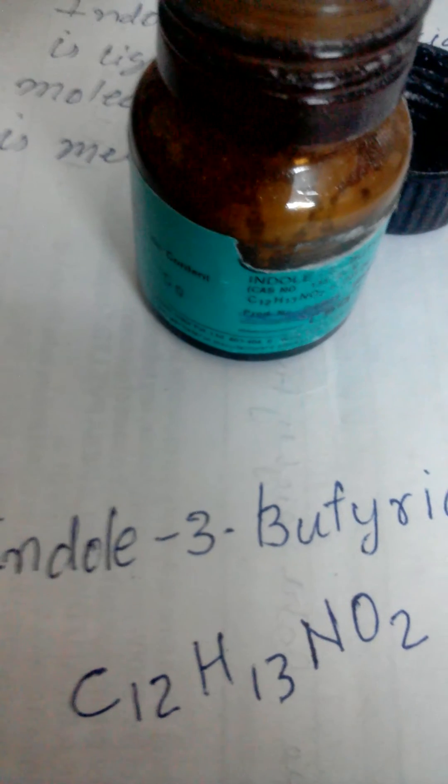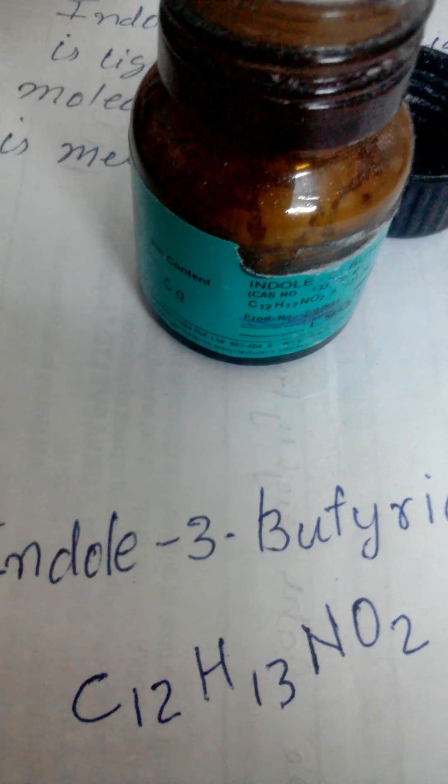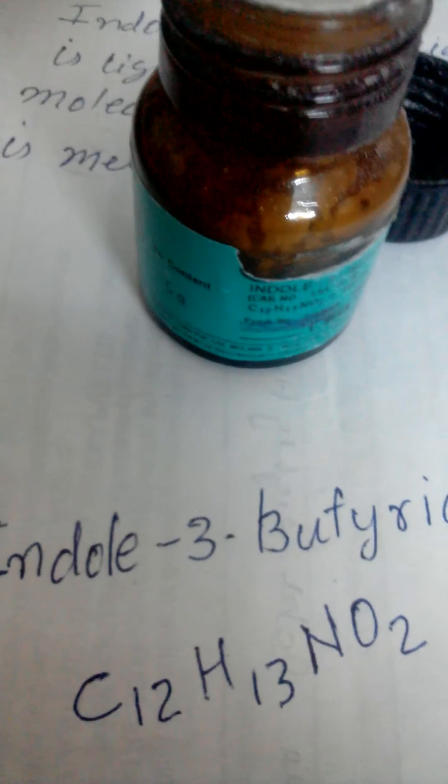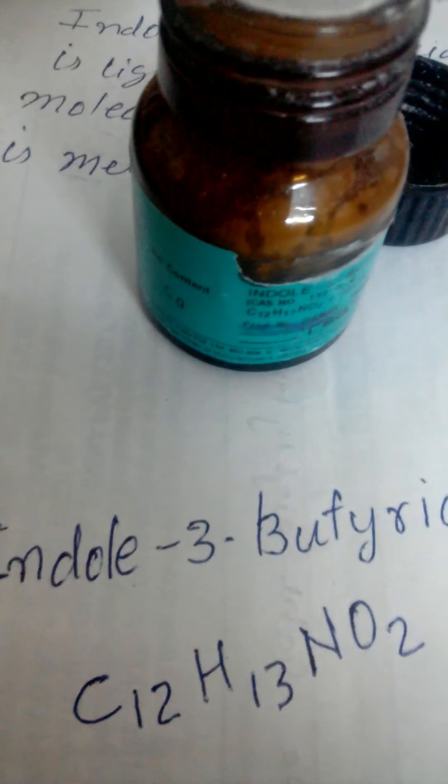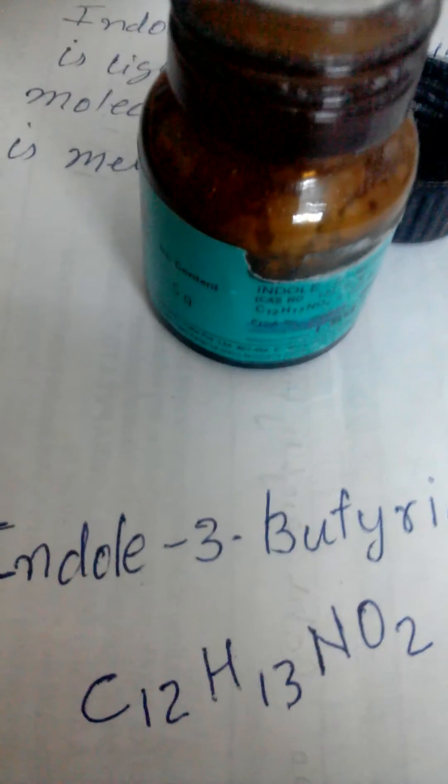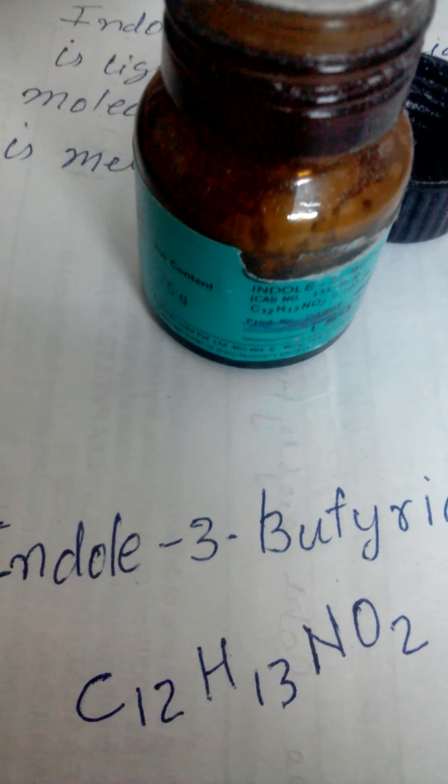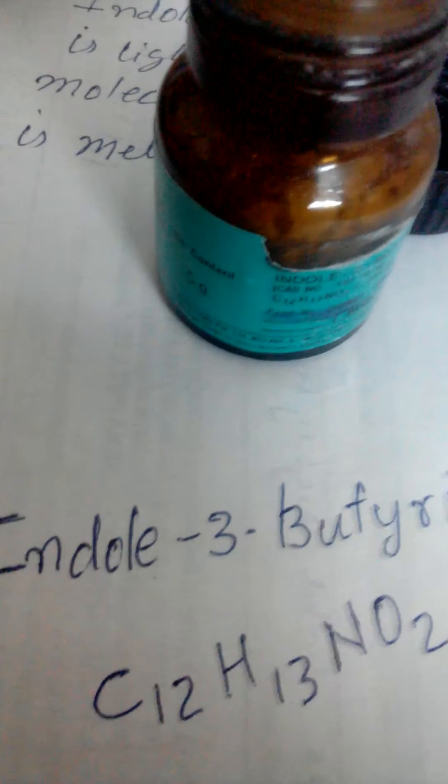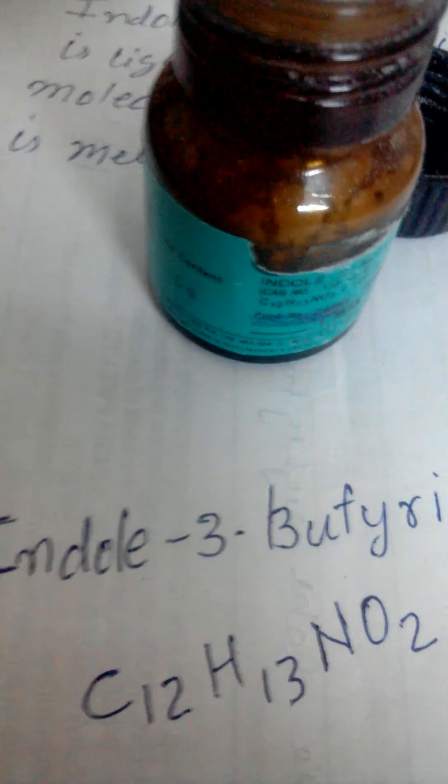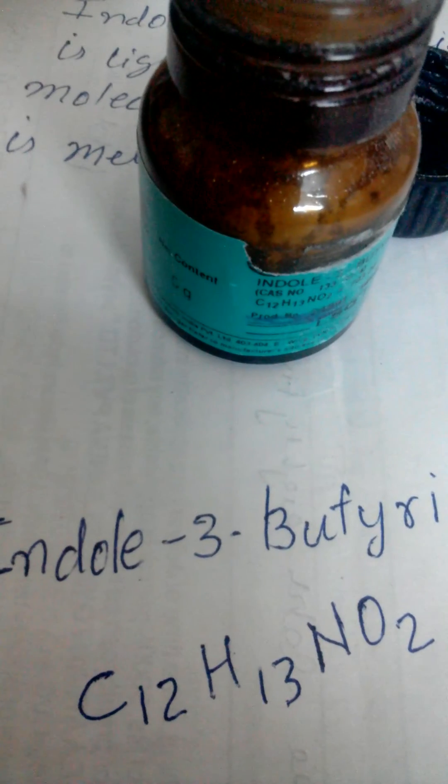Mix this alcohol in talcum, also known as magnesium stearate, 500 grams. You have to mix this talcum and alcohol until all alcohol evaporates. Now you have 500 grams rooting powder.